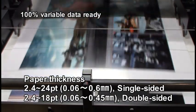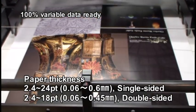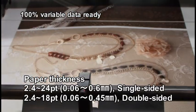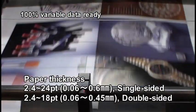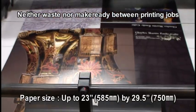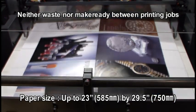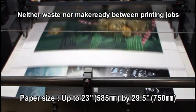Paper thickness 0.06 to 0.6 mm single-sided, 0.06 to 0.45 mm double-sided. Paper size up to 23 inches (585 mm) by 29.5 inches (750 mm).